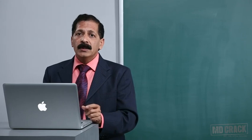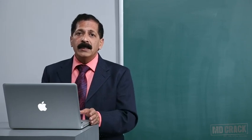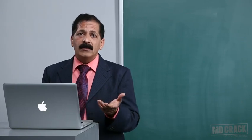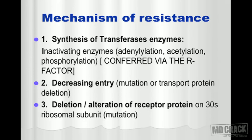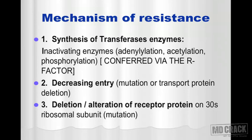In anaerobic organisms there is no oxygen-dependent transport, so naturally aminoglycosides cannot be used against anaerobes — they are innately resistant. The third mechanism is deletion or alteration of the receptor protein on the 30S ribosomal subunit. The 30S ribosomal subunit is the binding site for aminoglycosides. Microorganisms can either delete this receptor protein or produce an alteration in it through mutation. These are the three common mechanisms of resistance to aminoglycosides.